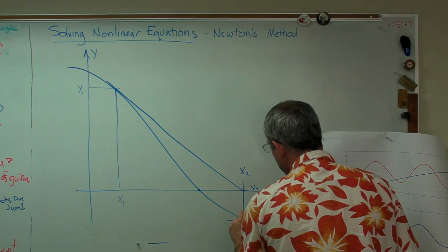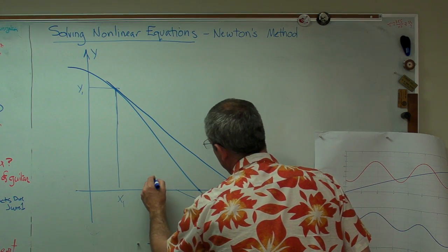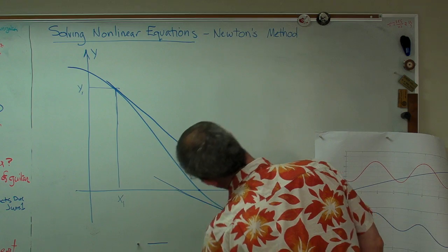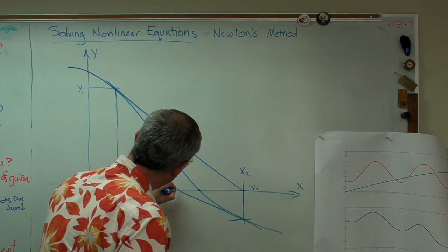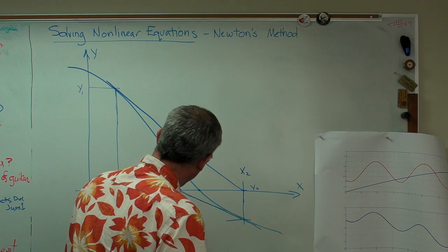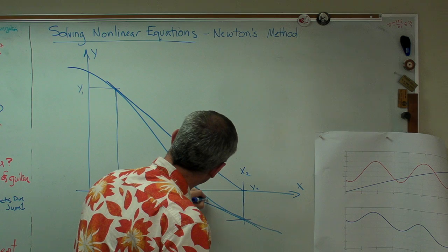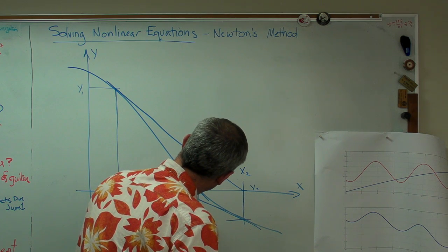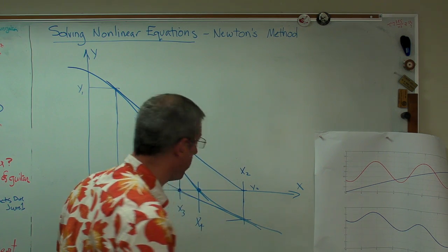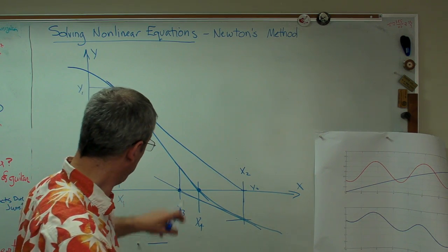So what we're going to do now is we're going to recalculate this, and we're going to draw another straight line approximation. And we're going to find a new estimate of the root. That's now x3. And we do the same thing. Go up, find another slope. And all of a sudden, x4 is now very, very close to the root.